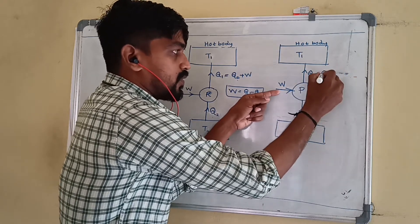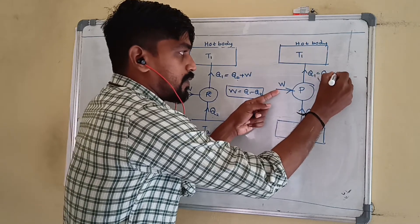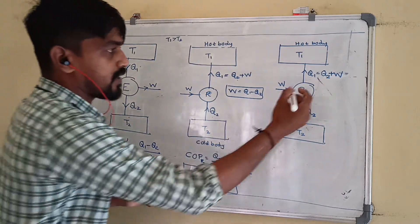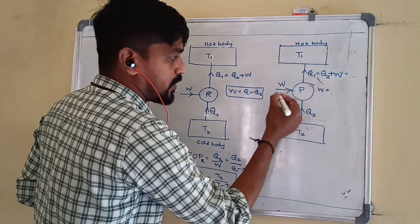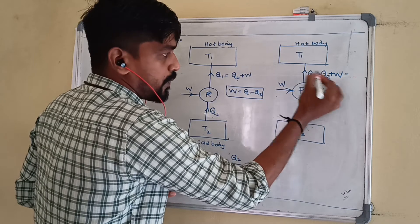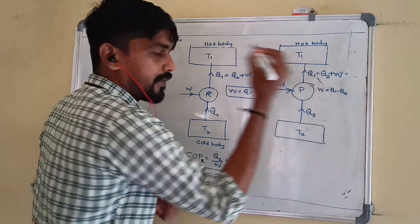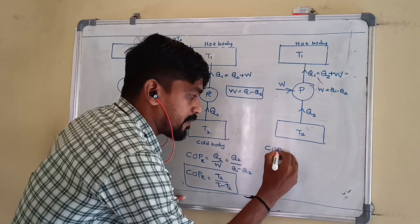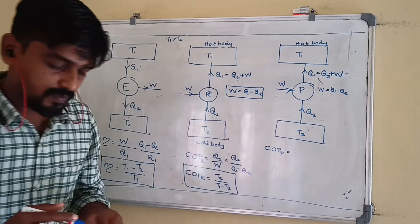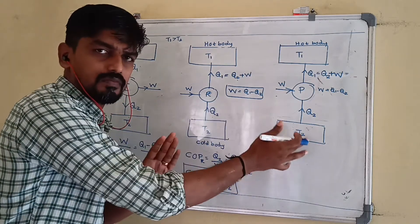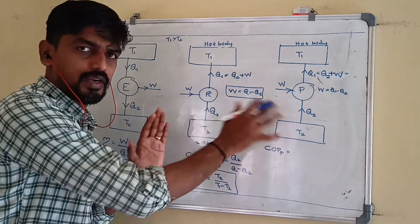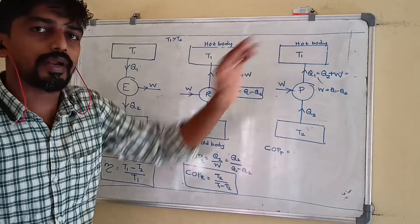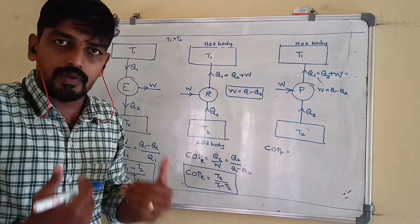Q1 equals Q2 plus W. So W equals Q1 minus Q2. The heat pump delivers heat to a high-temperature body. The desired output is Q1, the heat delivered to the hot body. The work input is W.